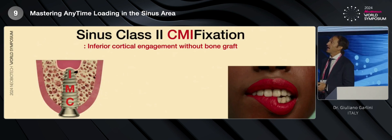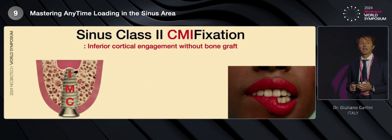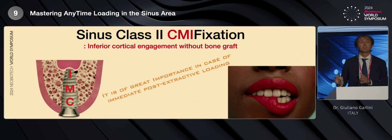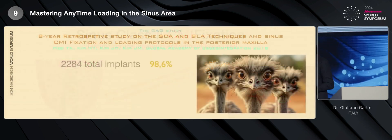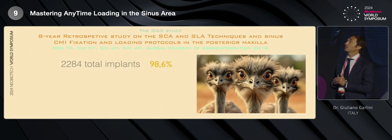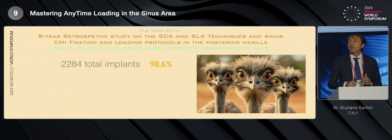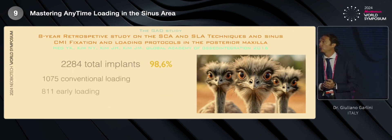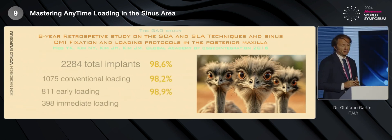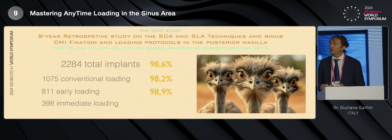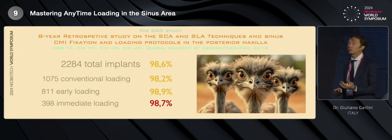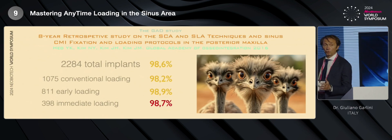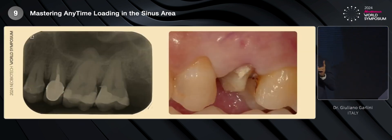From these cases, I understood that it is very important to have stability in the apex of the implant and that we can perform immediate post-extractive implants by this kind of procedure. In the meantime, the GAO published in 2016 a very important study about 2,284 implants that were inserted in a period of eight years of control and loading. And what did they find in this study? They found a very good success rate for the conventional loading, for the early loading, but also for the immediate loading — 98.7%. So I was convinced that I can perform immediate loading in sinus class 2 CMI fixation.